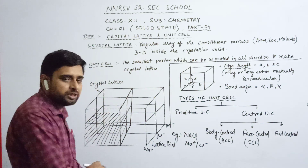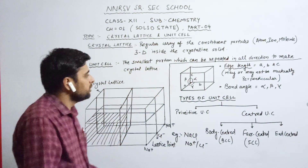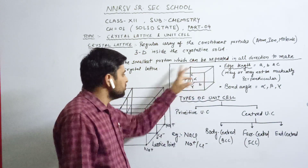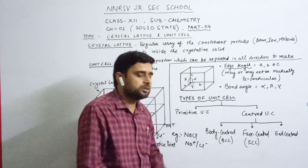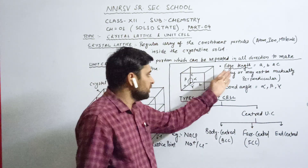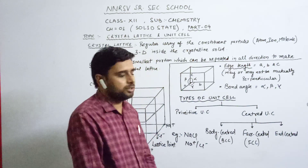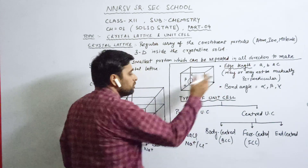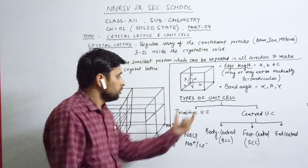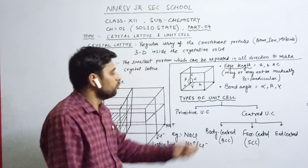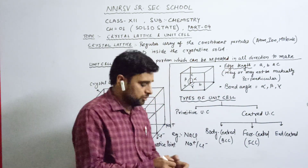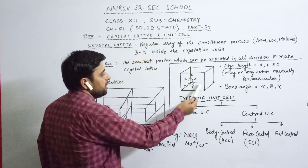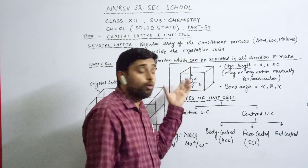Now let us move to the characteristics of the unit cell. There are two parameters of a unit cell. The first one is edge length, which is the distance between one constituent particle to another constituent particle along the three axes of the unit cell.